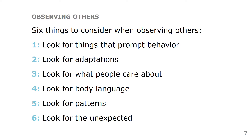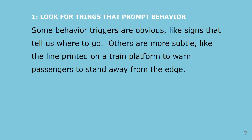Let's talk about each in a little more detail. First, we're going to look for things that prompt behavior. Some behavior triggers are obvious, like signs that tell us where to go. Others are more subtle, like a line printed on a train platform to warn passengers to stand away from the edge.